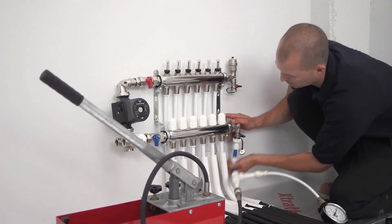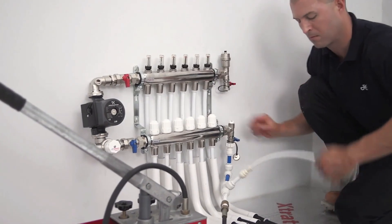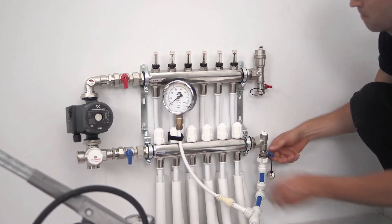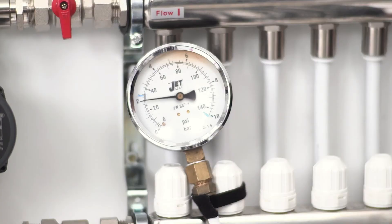Connect a suitable pressure testing kit to one of the fill valves. With the valve open, pump up the pressure to two bar. Isolate the pressure at the tester and leave for 10 minutes while checking for leaks or pressure drops.